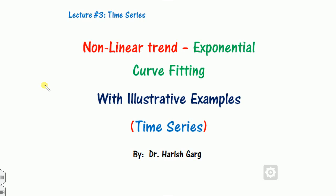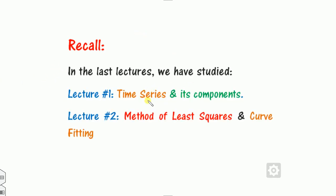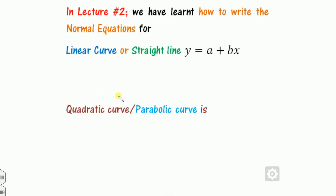So far we have studied two lectures on time series: one is based on what is the time series and its components. The second lecture was on the method of least squares, also called the curve fitting method. In those last two lectures we solved some time series problems and estimated their trends. What we studied in lecture two, we need to recall so that it is easy to understand this third lecture.